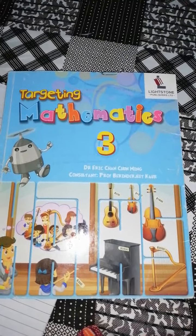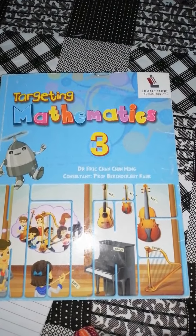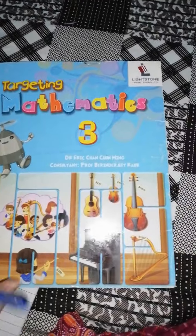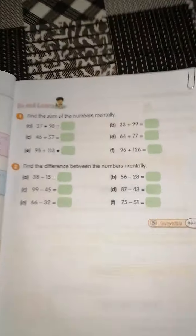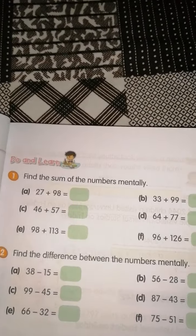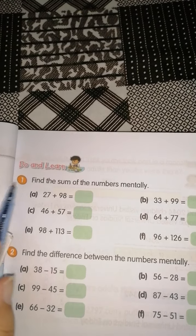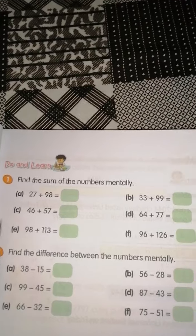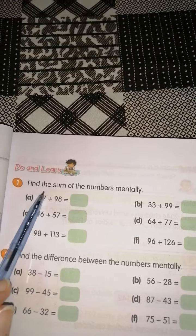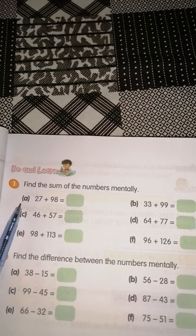Assalamu alaikum students, this is targeting mathematics for class 3 and today we are going to start page number 55. On this page we have to do sums of addition and subtraction. Question number one is find the sum of the numbers mentally, یعنی آپ کو ان کا sum معلوم کرنا ہے۔